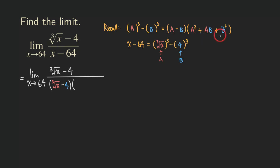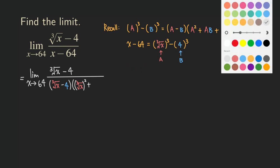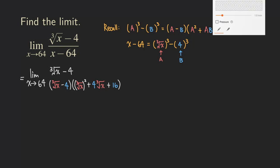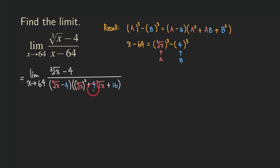Then times the trinomial: the second factor starts with A squared — so cube root of x squared, which we can write as x to the two-thirds. Then plus A times B, which is 4 times cube root of x. And lastly B squared, which is 4 squared equals 16. So we factor x minus 64 into those two factors.